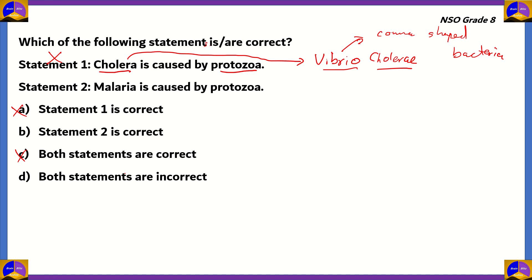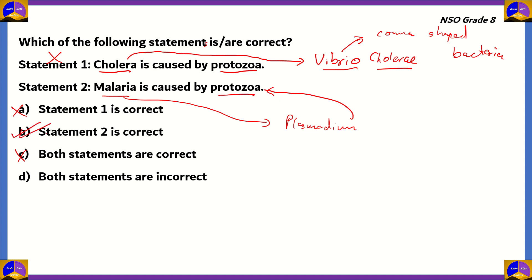We need to find out whether option B or D is the correct option. Statement two says malaria is caused by a protozoa. Malaria is caused by an organism known as plasmodium, and plasmodium is one of the classic examples of protozoa. Therefore, option B — statement two is correct — turns out to be the right option. Malaria is caused by a protozoa, as opposed to cholera, which is caused by a bacteria.